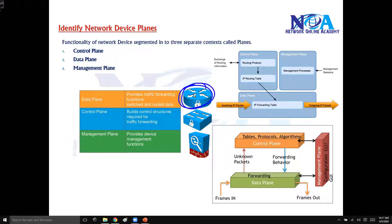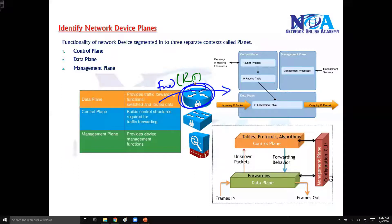For example, a router is going to forward traffic between different networks. To do that, it has to build a routing table, run the routing protocol, and you might implement some ACLs to restrict traffic — there are plenty of things involved.